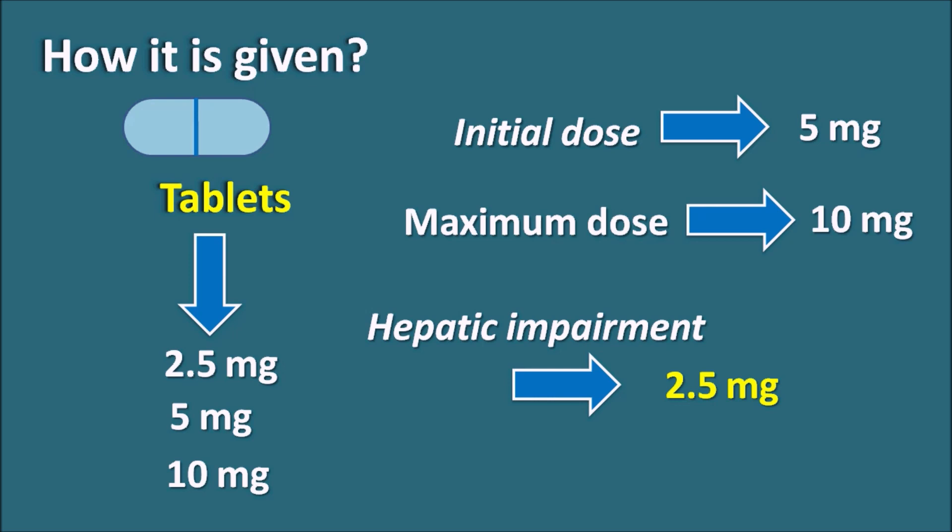In summary, amlodipine is a calcium channel blocker with an amino ethoxy group and a chloro group within the structure. It acts on both cardiac and vascular smooth muscle, with more affinity towards vascular smooth muscle. Since it acts as a vasodilator, it is used in hypertension, vasospastic and chronic stable angina, and coronary artery disease in patients without heart failure. Headache and edema are the two most important side effects. Thank you for watching.